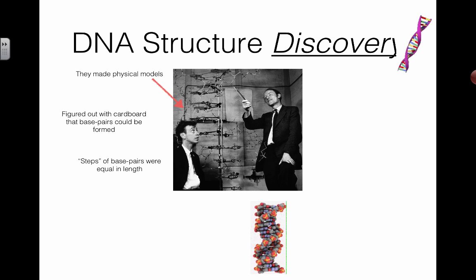They actually cut out cardboard pieces and made steps in the middle that were of similar length. They figured out that the bases have to fit together uniformly—you can't have a wide step then a narrow step alternating. That's how they figured out that A binds with T and C binds with G.